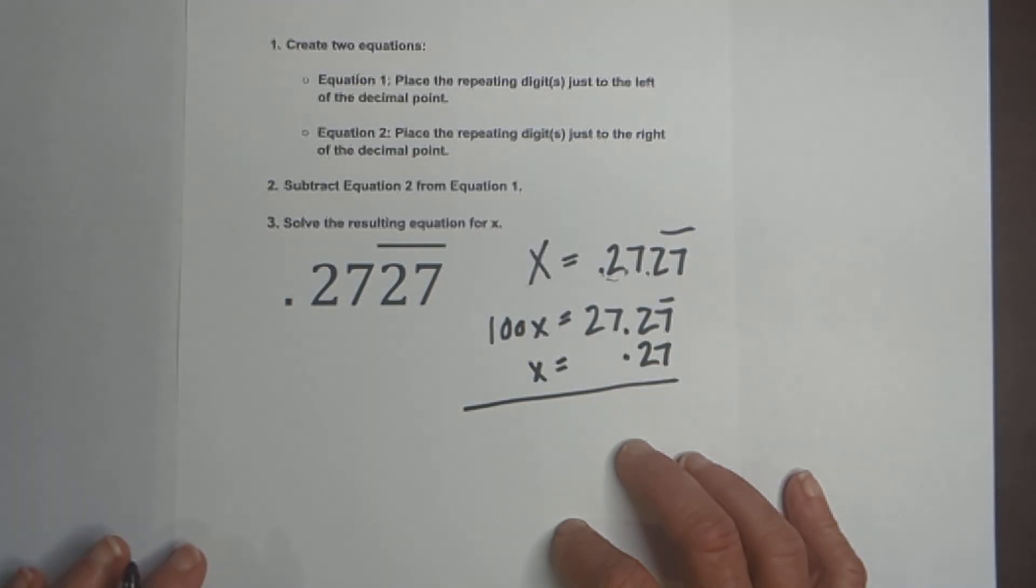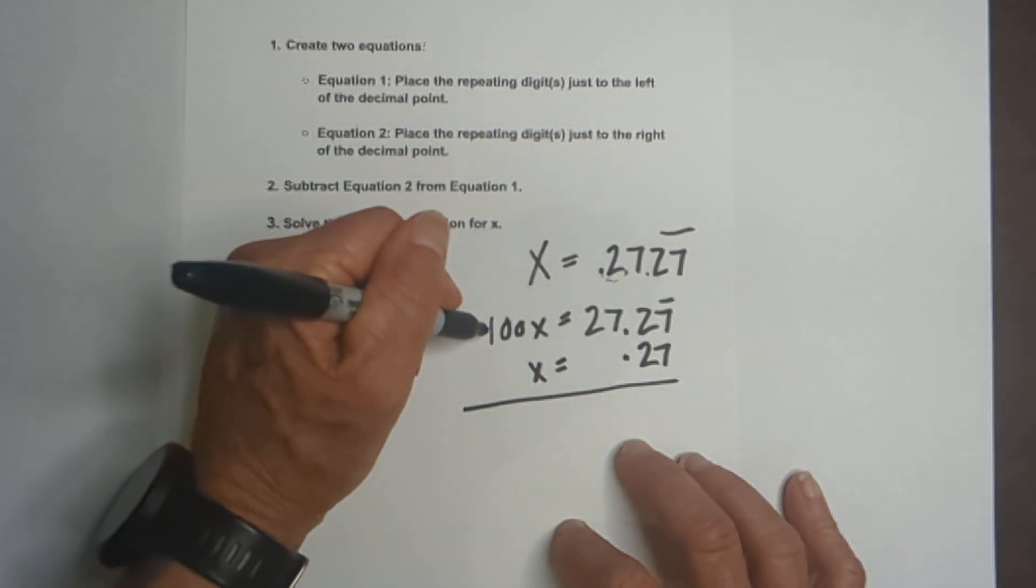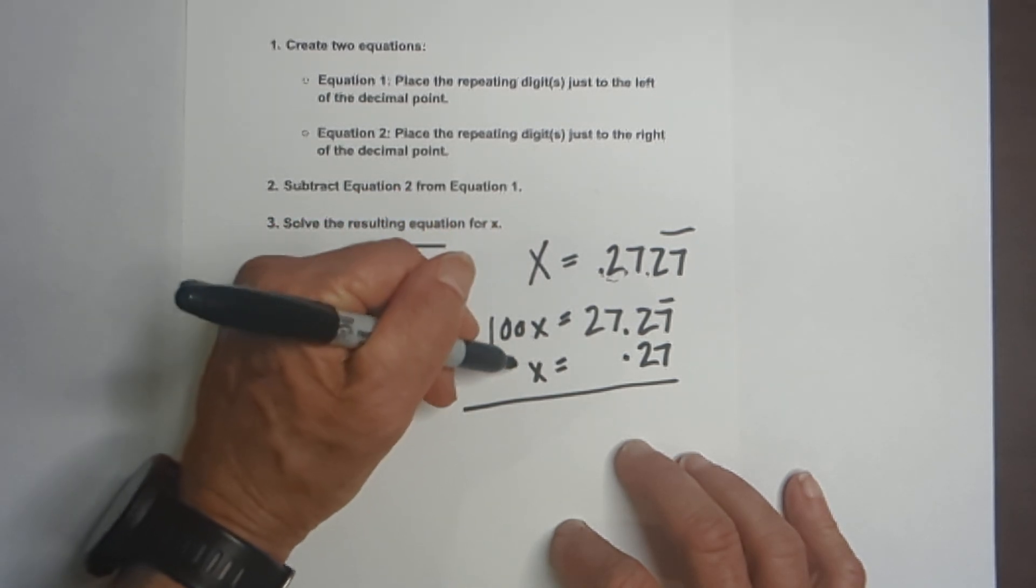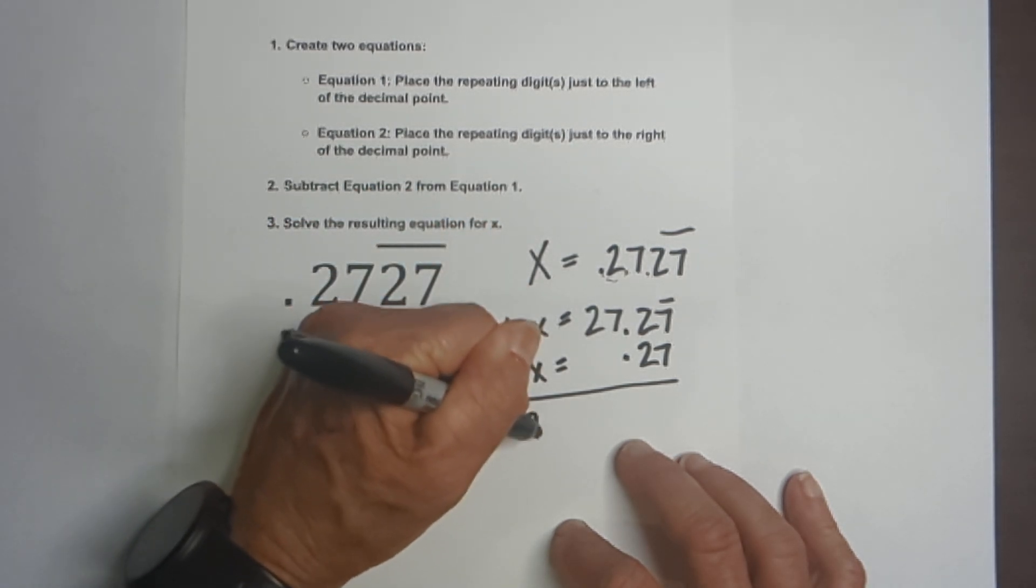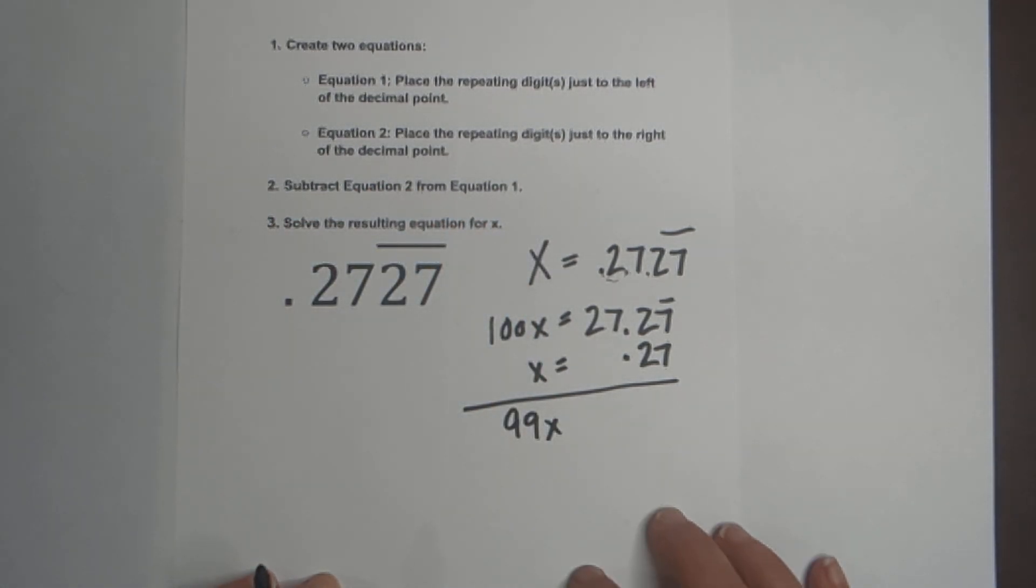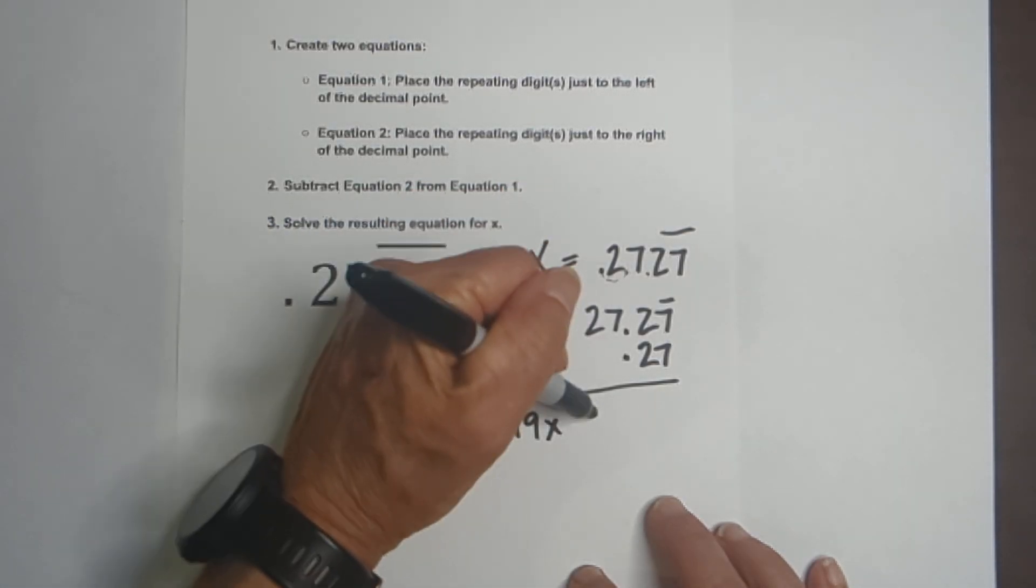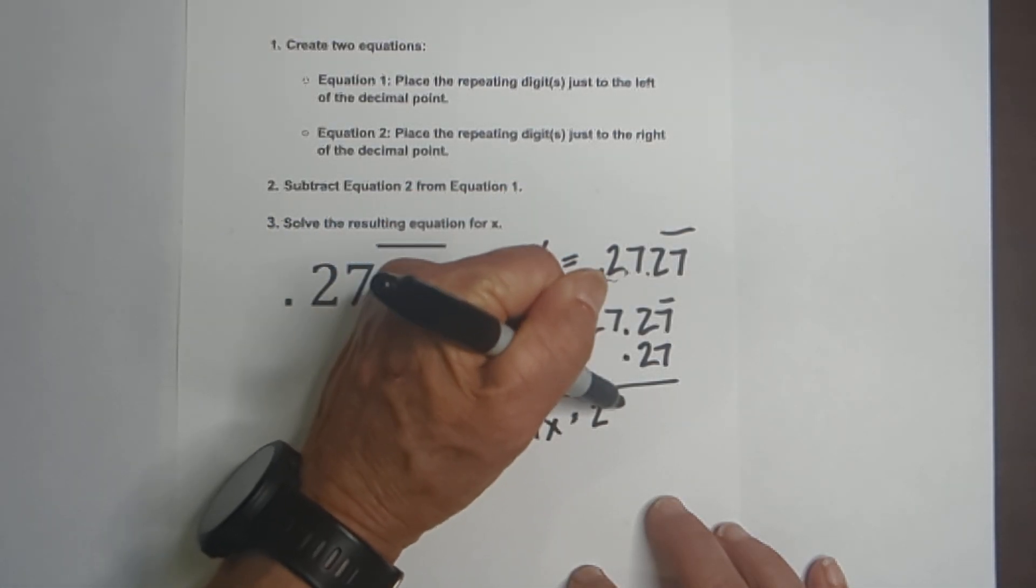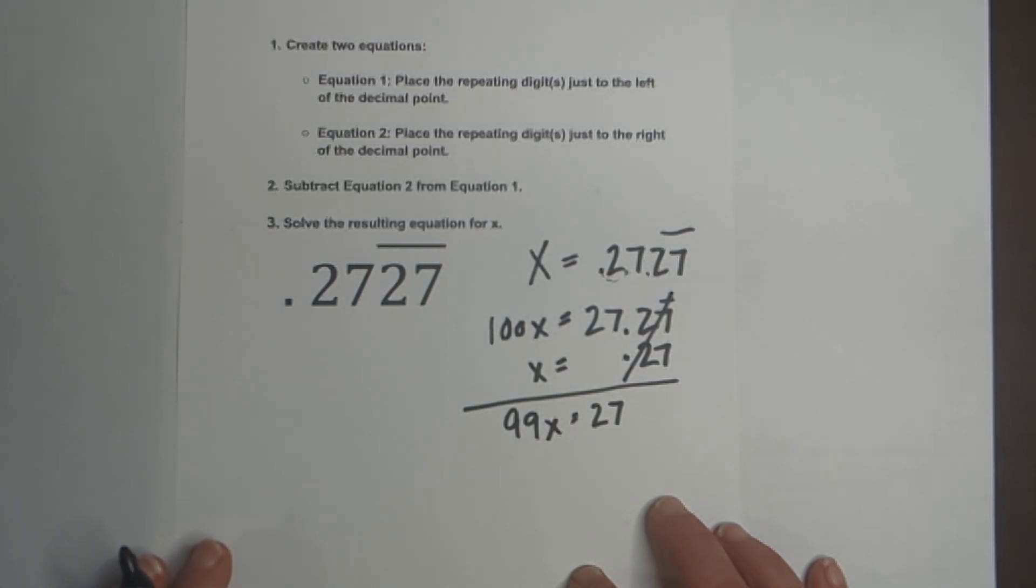So now we have two equations and so we're going to subtract. 100x minus x is 99x and then bring down the 27 and then all of this cancels.